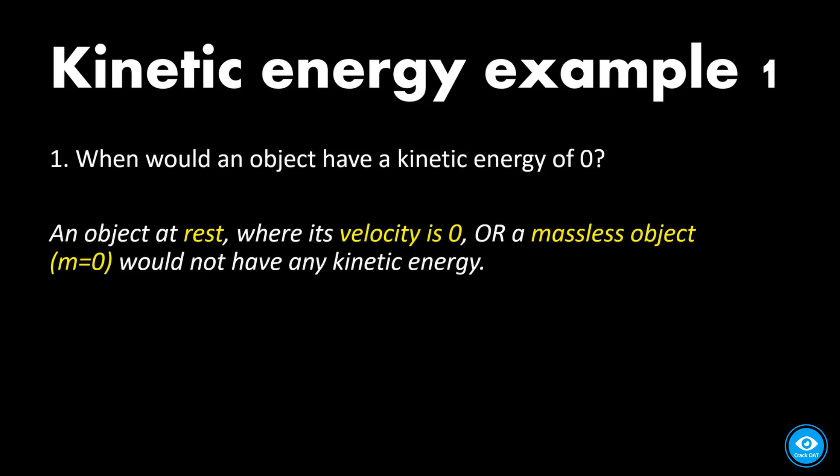So first, we're going to solve a problem involving kinetic energy. When would an object have a kinetic energy of zero? If you think about it, the equation for kinetic energy is one-half mass times velocity squared. So if either mass or velocity is zero, then kinetic energy would be zero.